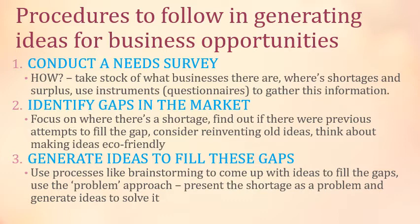Number two: Identify gaps in the market. Focus on where there is a shortage. Find out if there were previous attempts to fill the gap. Consider reinventing old ideas. Think about making ideas eco-friendly — a lot of people are now more into saving the planet, so if you can bring something new out that will save the planet, more people are more likely to buy your product. Use processes like brainstorming to come up with ideas to fill the gaps. Use the problem approach — present the shortage as a problem and generate ideas to solve it.